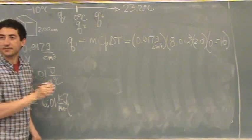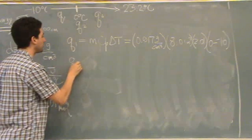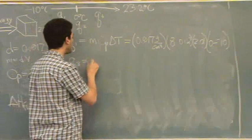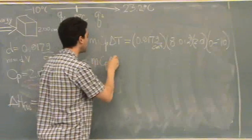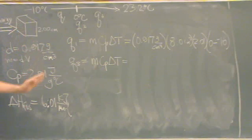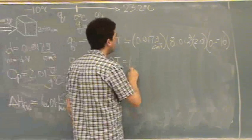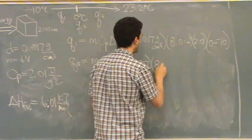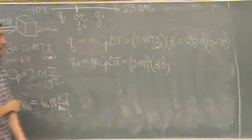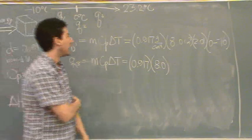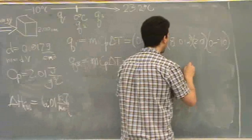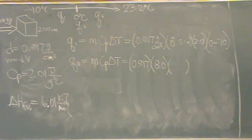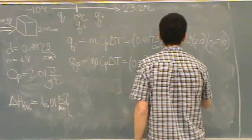Let's skip Q2 for a second because Q3 and Q2 are pretty similar. Q3 is M Cp delta T again. We're going up from 0 to 23. The mass again is 0.917 times the volume 8.0. What's the heat capacity, or the specific heat?